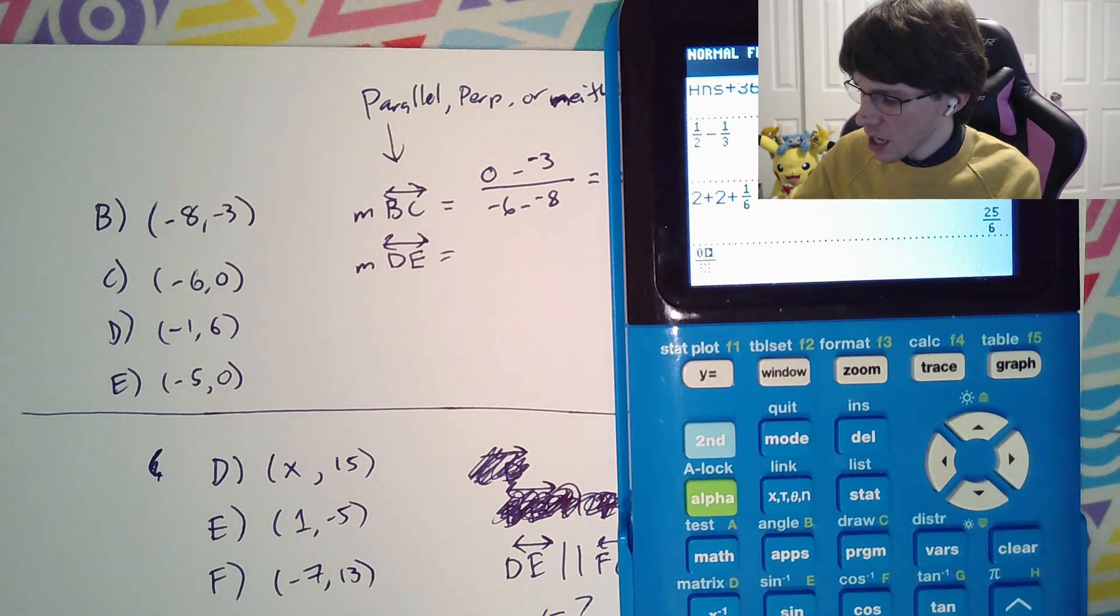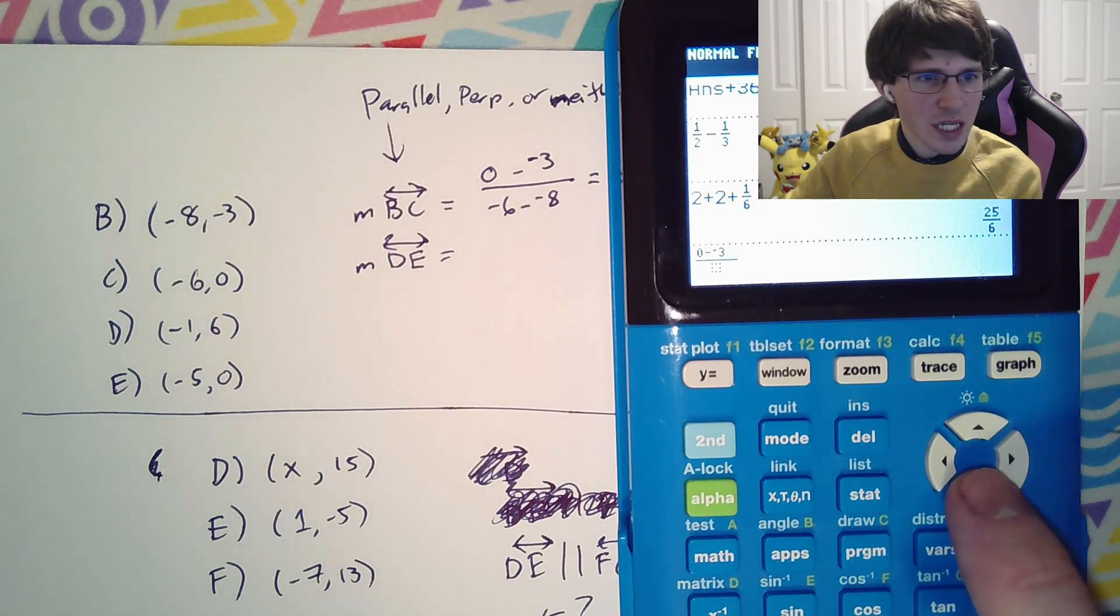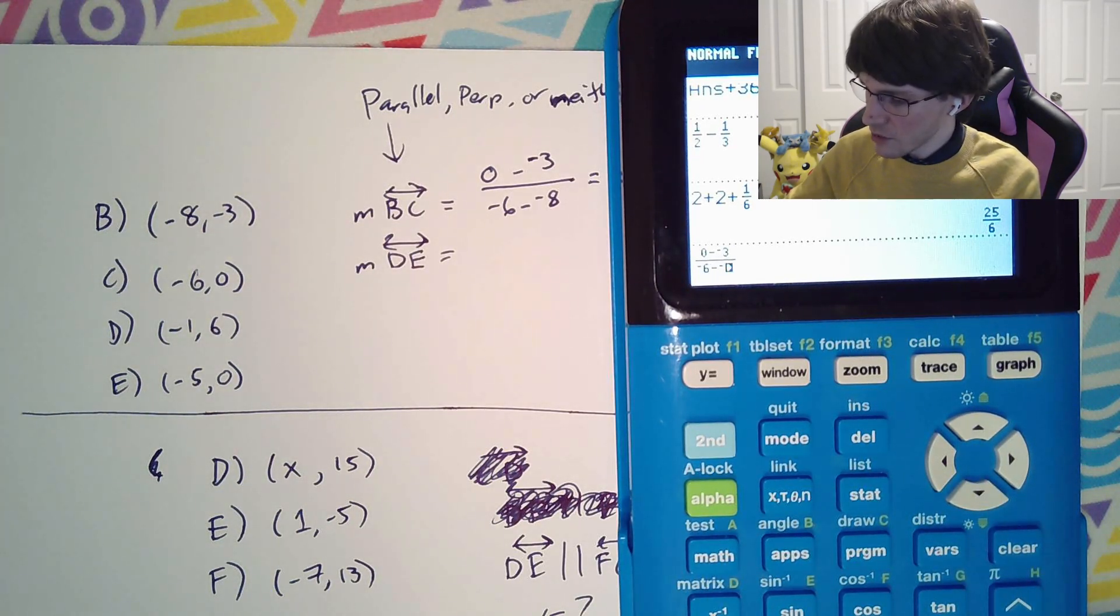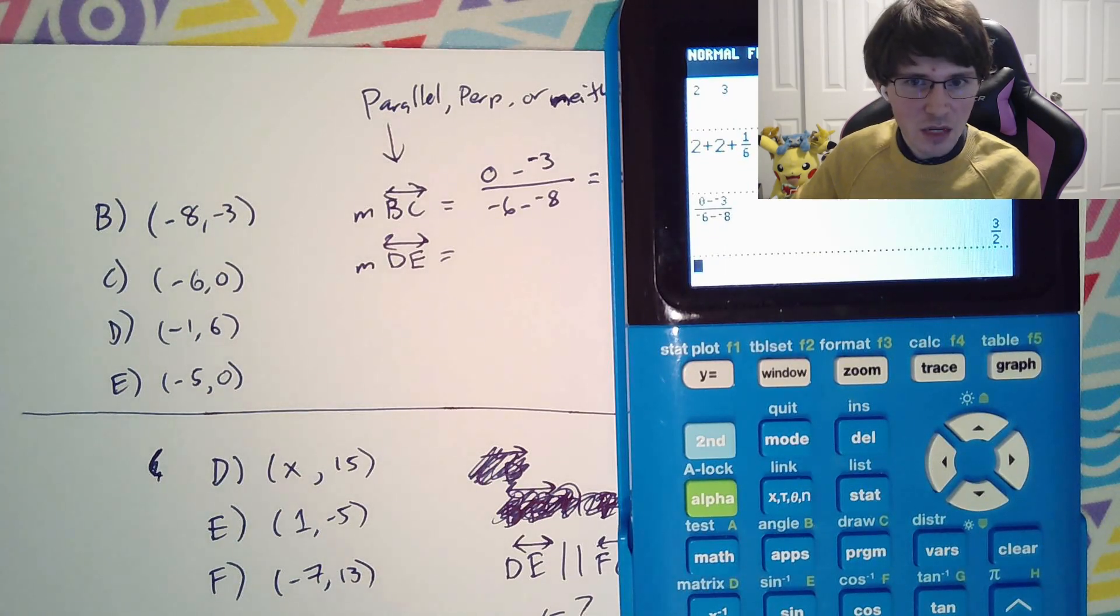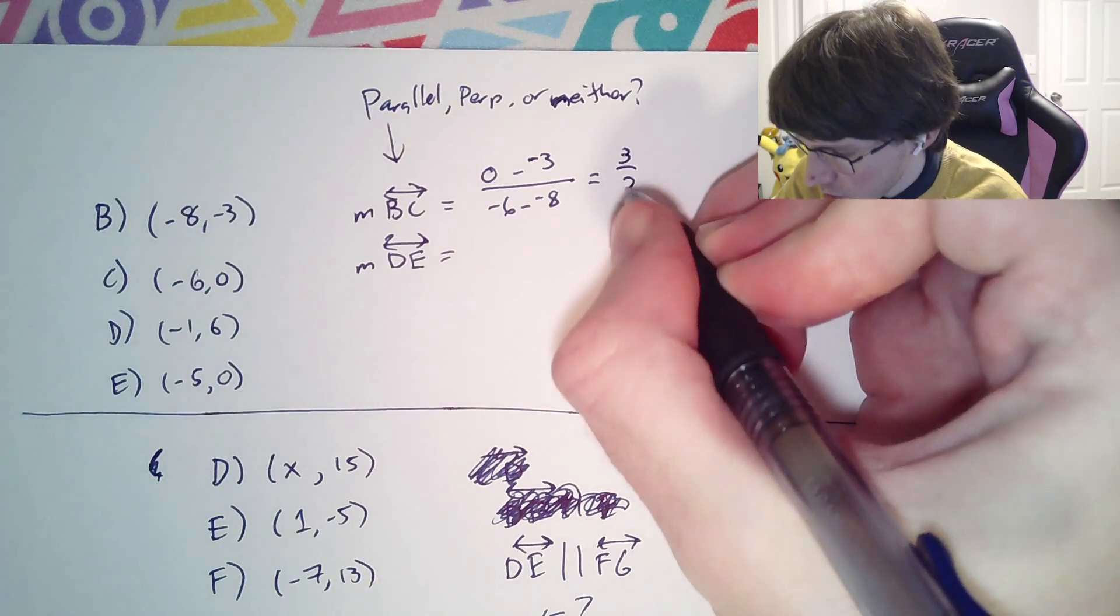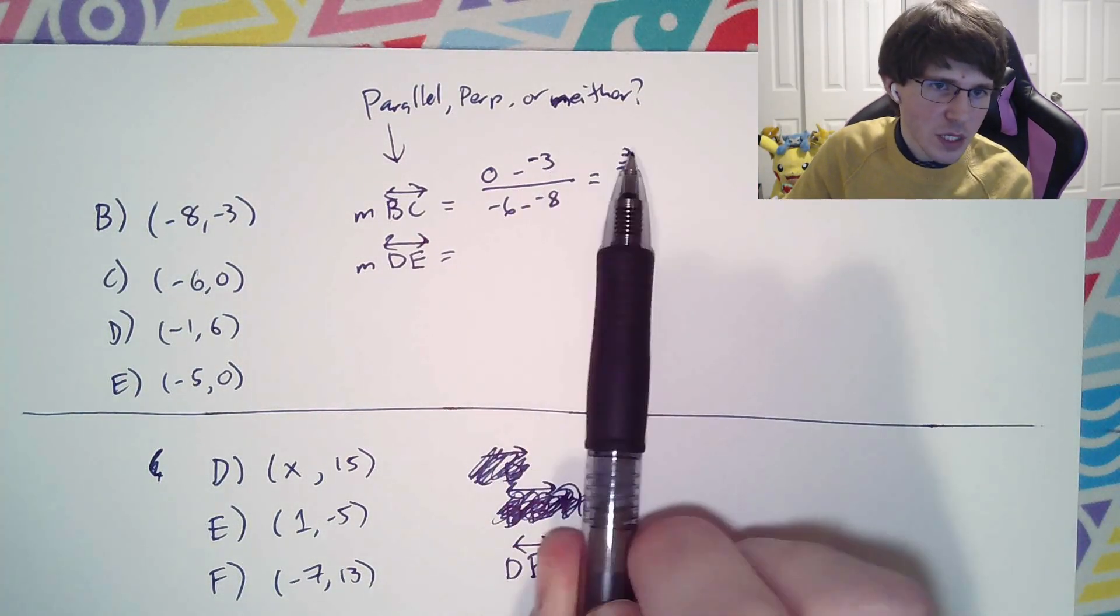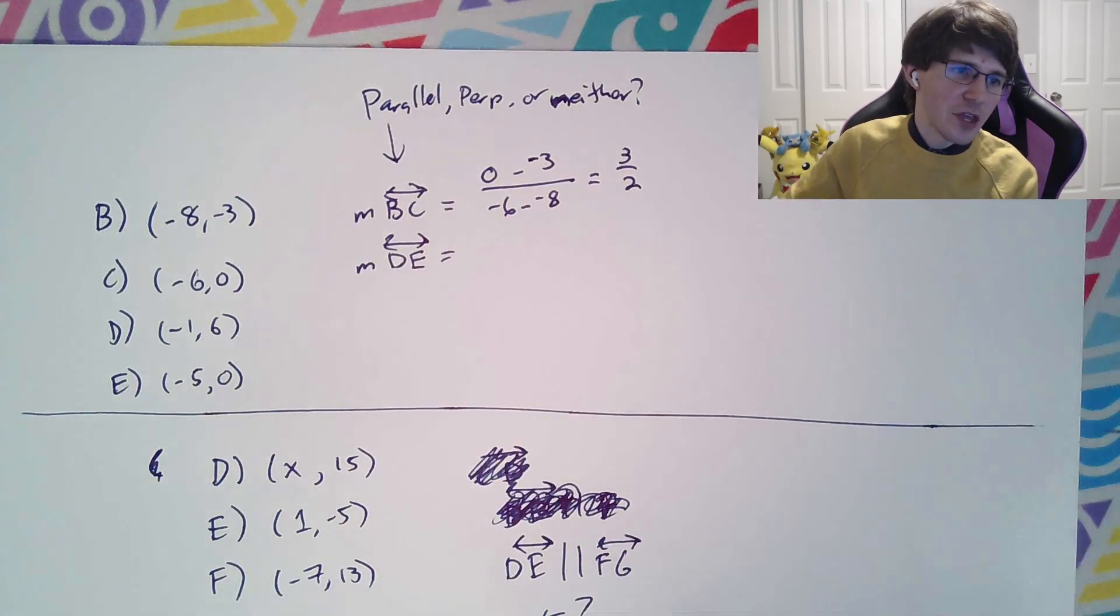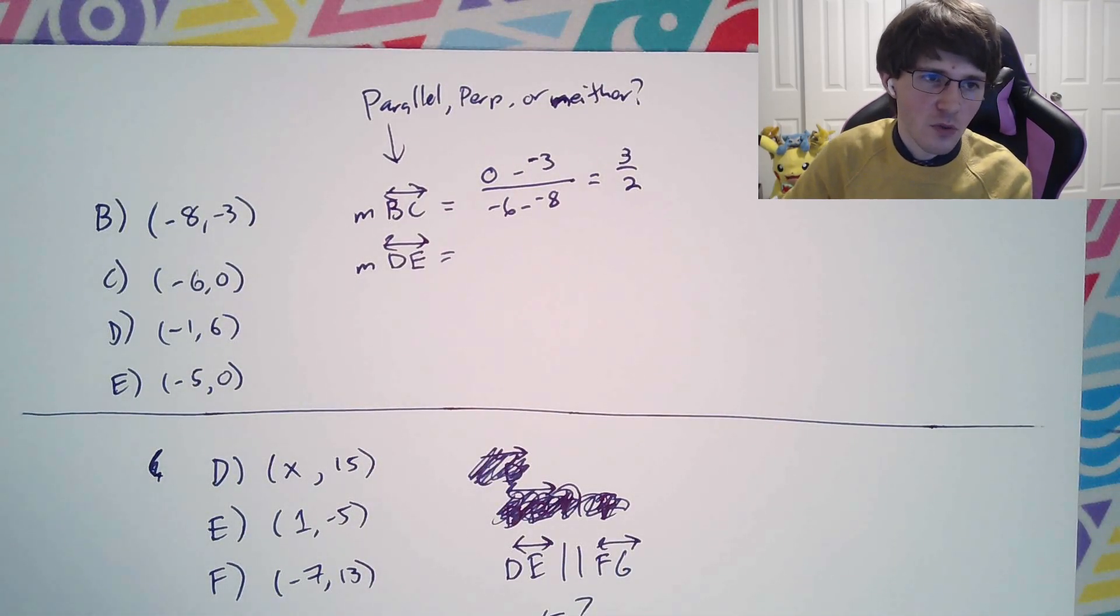0 minus negative 3 over negative 6 minus negative 8. You can type it in just as it appears. You get 3 over 2. Please note, you could have done that in your head for sure. 0 minus negative 3, 0 plus 3 is 3. And negative 6 plus 8 is 2. I think you could have done that one in your head if you really wanted to.